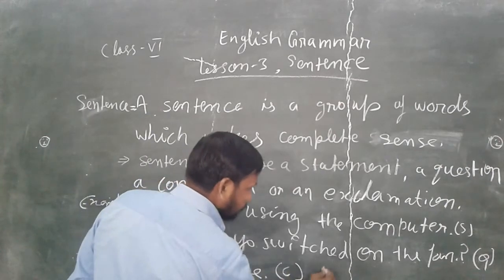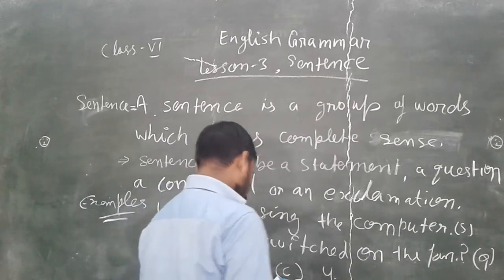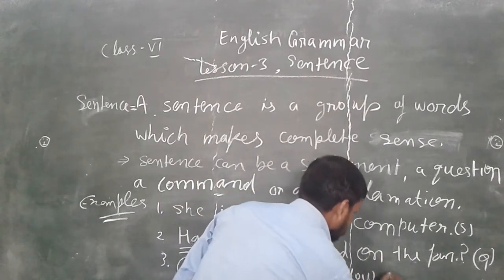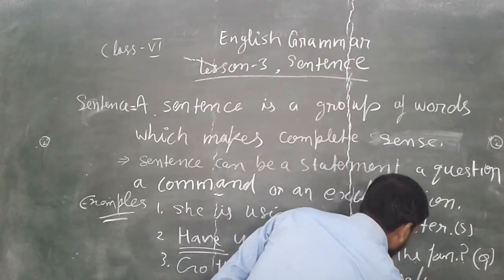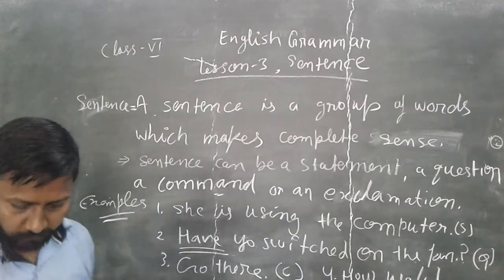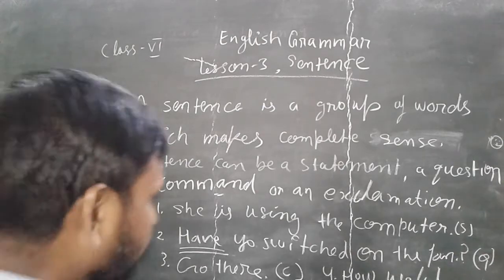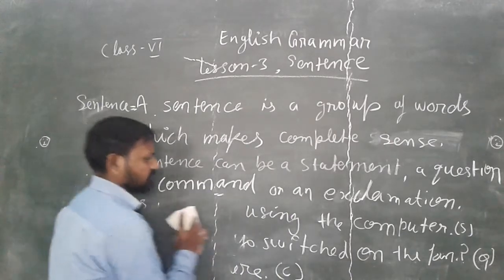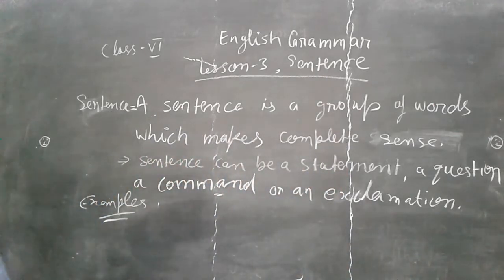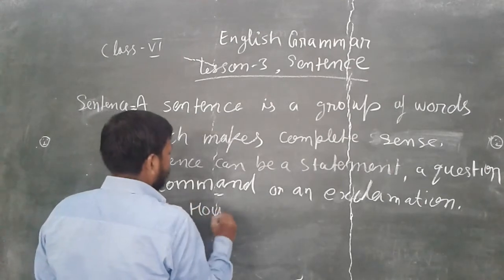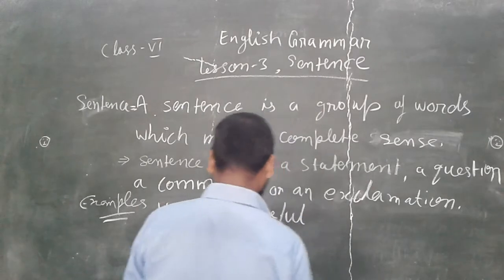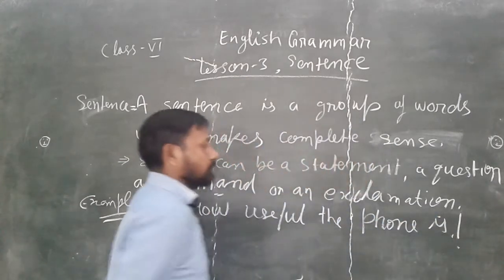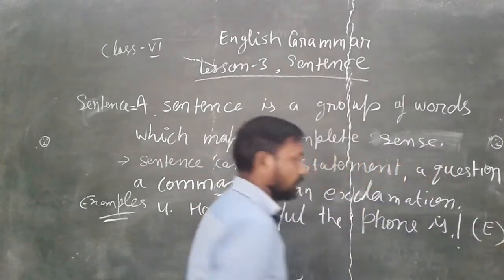For the command, we can write 'C' here. Now the fourth example: 'How useful the phone is!' That is an exclamation. I have written an exclamation sign here, and we can write 'E' for exclamation. So these are the four types of sentences.